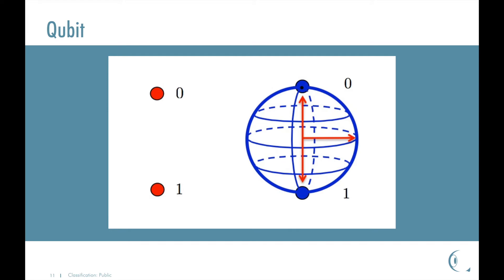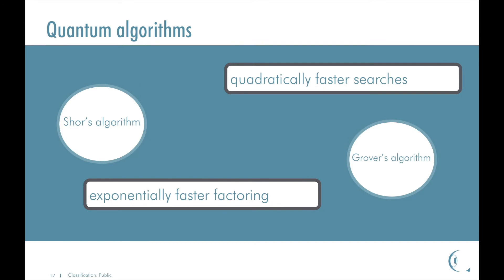Thus, a quantum computer is able to solve certain problems, like searching and factoring, much faster than it would take a classical computer to solve the same problem. Algorithms that exploit the quantum effects, such as superposition, are known as quantum algorithms. The most well-known quantum algorithms are the Shor's algorithm and the Grover's algorithm. The Shor's algorithm for factoring runs exponentially faster with respect to any known classical computation, while the Grover's algorithm for searches, for example searching unstructured databases, runs quadratically faster than the best possible classical algorithm for the same task.